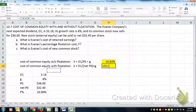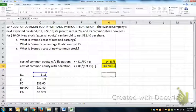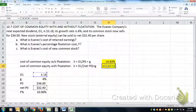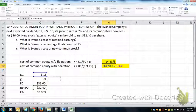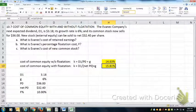With flotation costs, it's D1 over net P0 plus G.